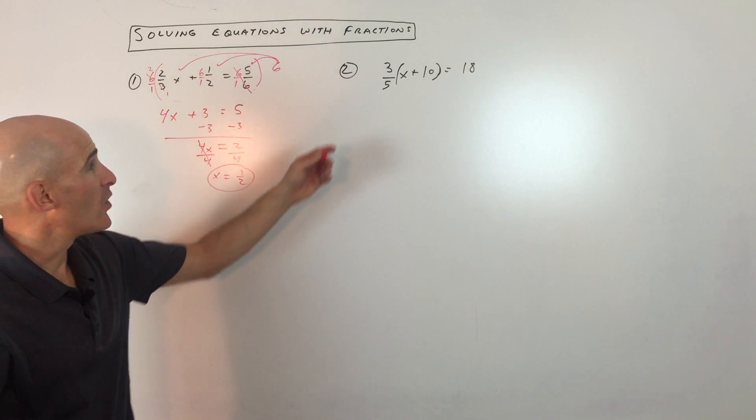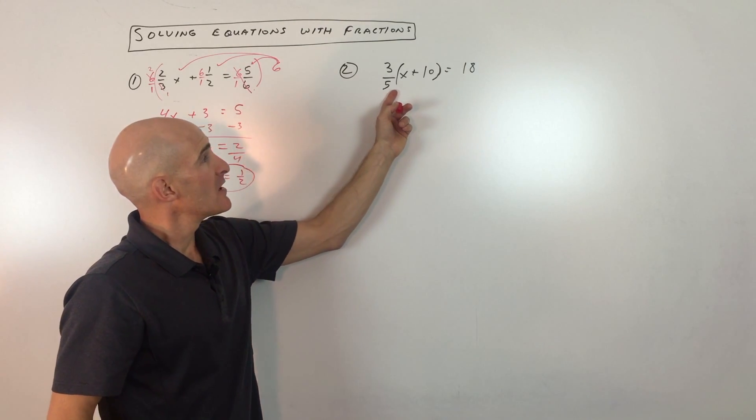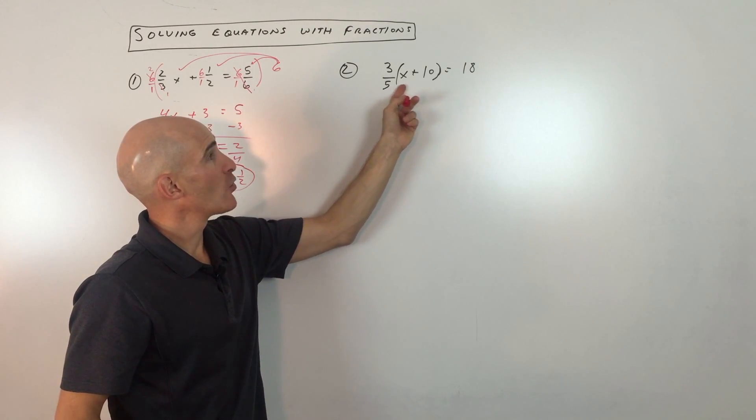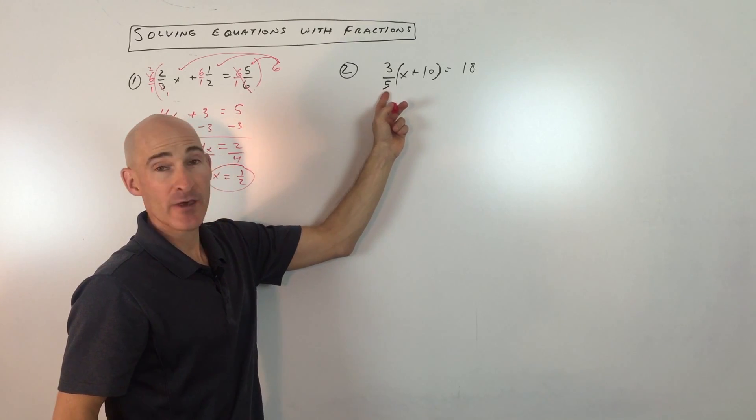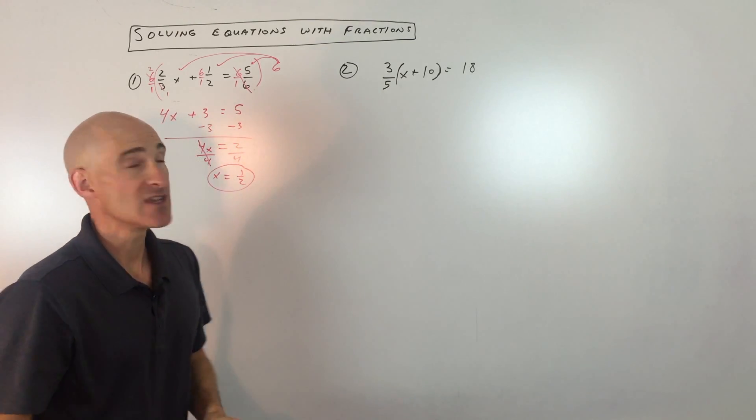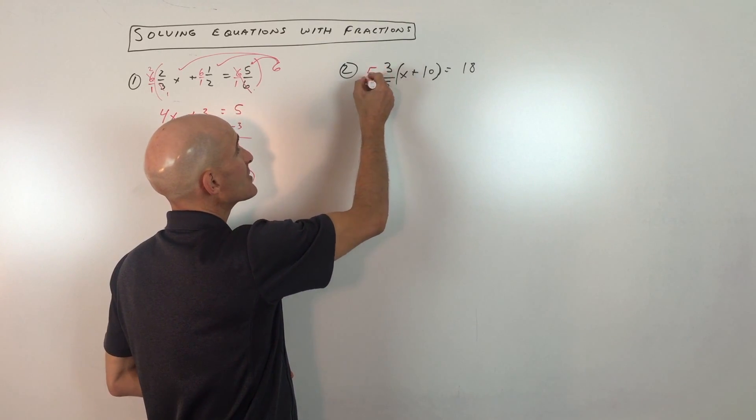Let's go to the next one. So number 2, here what you can see is we have this whole quantity, x plus 10, being multiplied by 3 fifths. So one way to get rid of the 3 fifths is to multiply by the reciprocal.